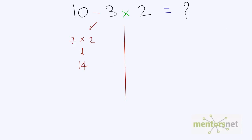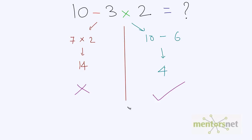Another way of solving this expression is to first solve the multiplication. So 3 times 2 is 6, and we have to subtract 6 from 10. So 10 minus 6, then we perform the subtraction operation, so 10 minus 6 is 4. The correct way of solving this is the second method, and not the first. It's only because of Bodmer's rule — Bodmer's rule gives more priority to multiplication over subtraction.